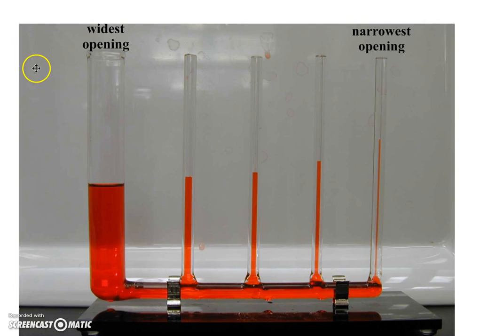Okay, so this apparatus is basically five tubes. The one on the left has the widest opening or the largest diameter. And as we go to the right, the tubes get skinnier and skinnier.